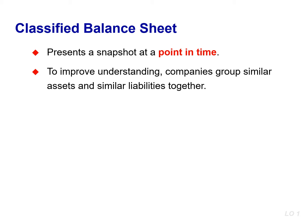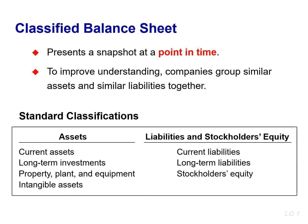A classified balance sheet generally contains the standard classifications listed in this table. The classifications for assets will be current assets, long-term investments, property, plant, and equipment, and intangible assets. For liabilities, we will distinguish between current and long-term liabilities. The stockholders' equity section will remain the same, listing common stock and then retained earnings.